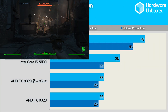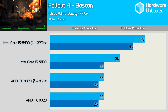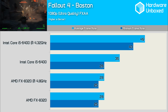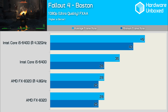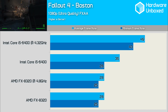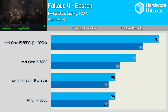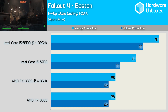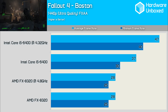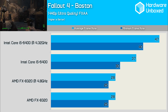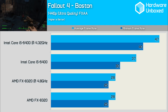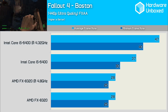The frame rates in the Boston City section of Fallout 4 are significantly lower than other sections of the game, even on the Intel processors. Despite the heavy overclock, the 4.8GHz FX8320 isn't able to overcome this issue. Increasing the resolution to 1440p doesn't reduce the performance of the Radeon R9 390 in this section — the FX8320 still dips to just 25fps with a 28fps average.